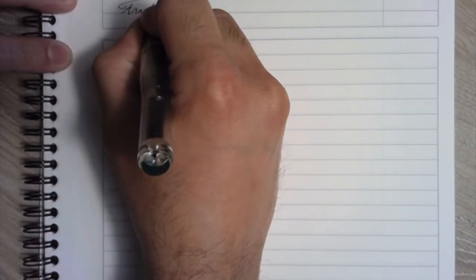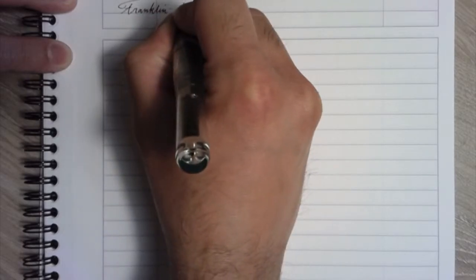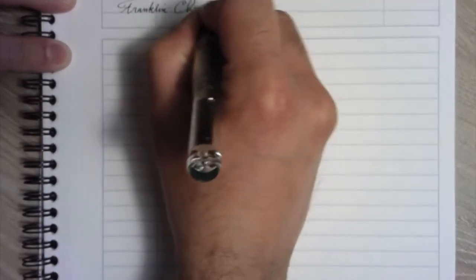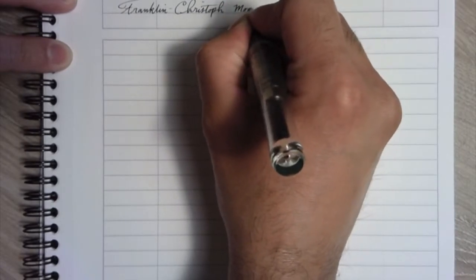As I said today, we're writing with a Franklin Christophe Model 2. As you can see, this ink flow is pretty consistent. Works every time, all the time. Very good writer.